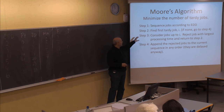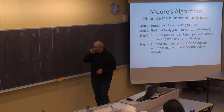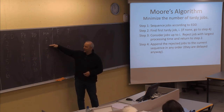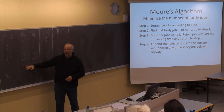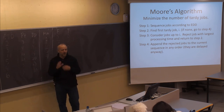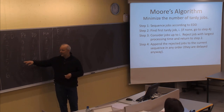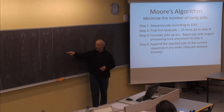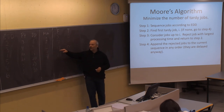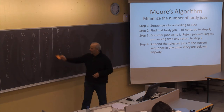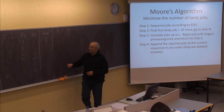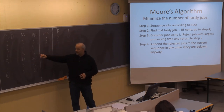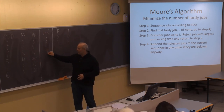We jump to step three again. Consider the jobs up to job number 4 — jobs 2, 3, 5, and 4 — and reject the job with the largest processing time. Looking at the processing times, we reject job number 5, which has processing time 10. Not job number 4, which is the delayed one, but job number 5 with the largest processing time. We now have a new schedule: 2, 3, with 1 and 5 rejected, continuing with 4 and 6.